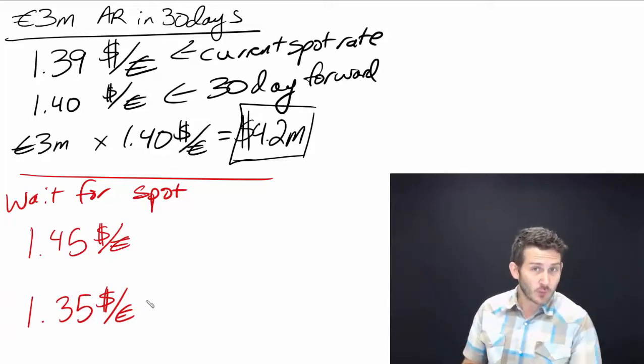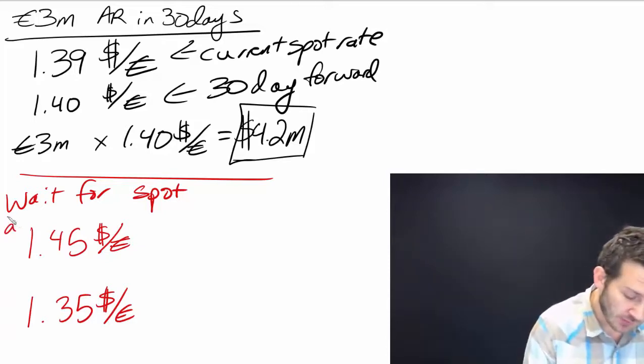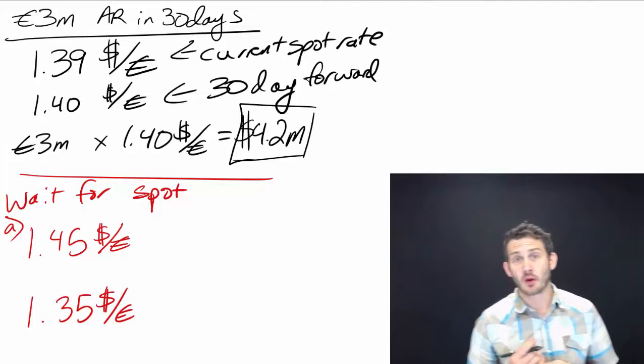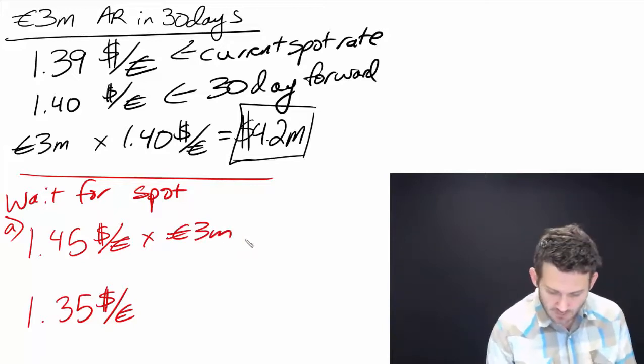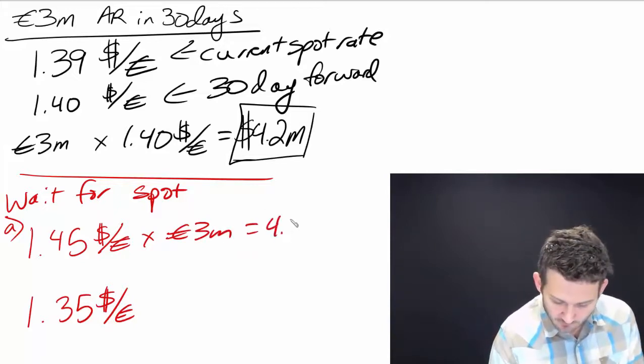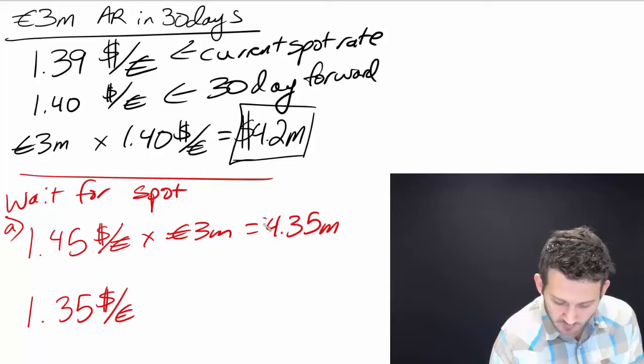These are two examples. Our first example, Example A, is it goes up to 1.45 dollars per euro. So what we're going to have here is we'll multiply that rate by my 3 million euros, and that means that I would end up receiving 4.35 million dollars.